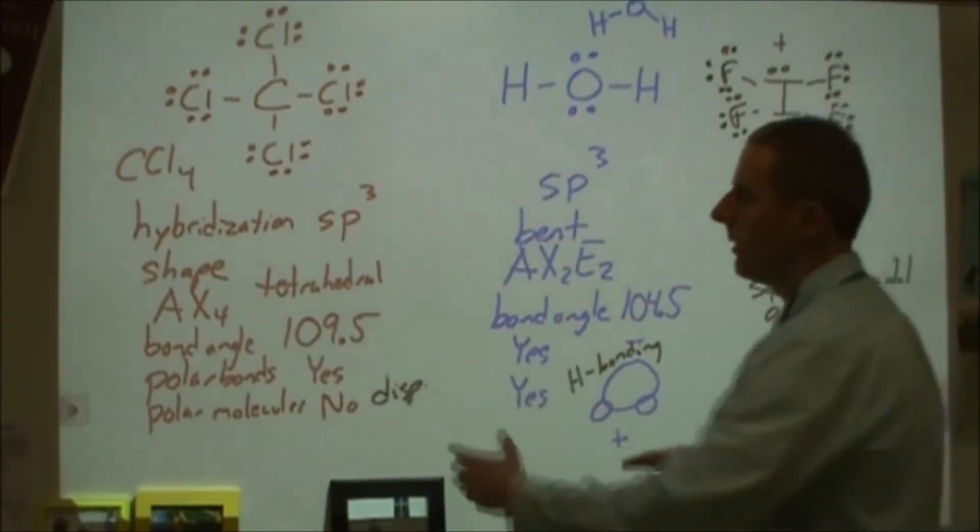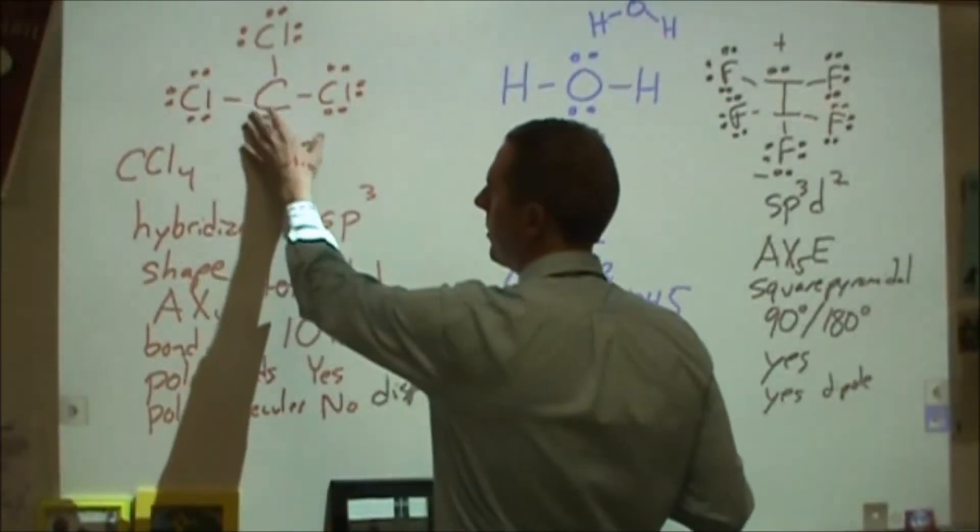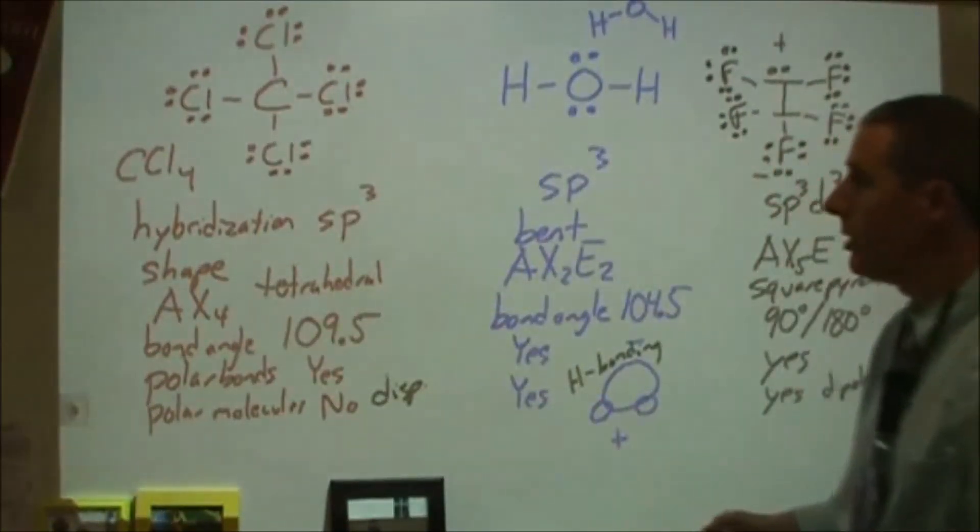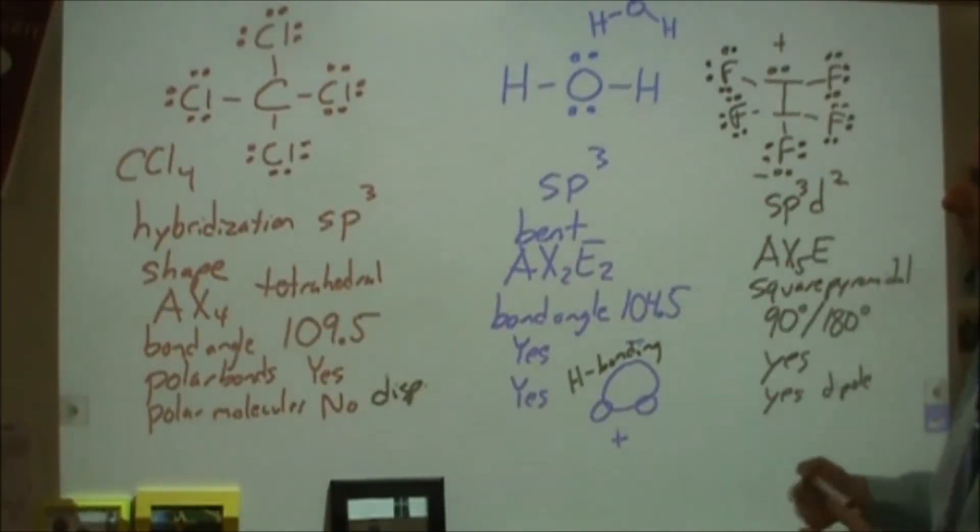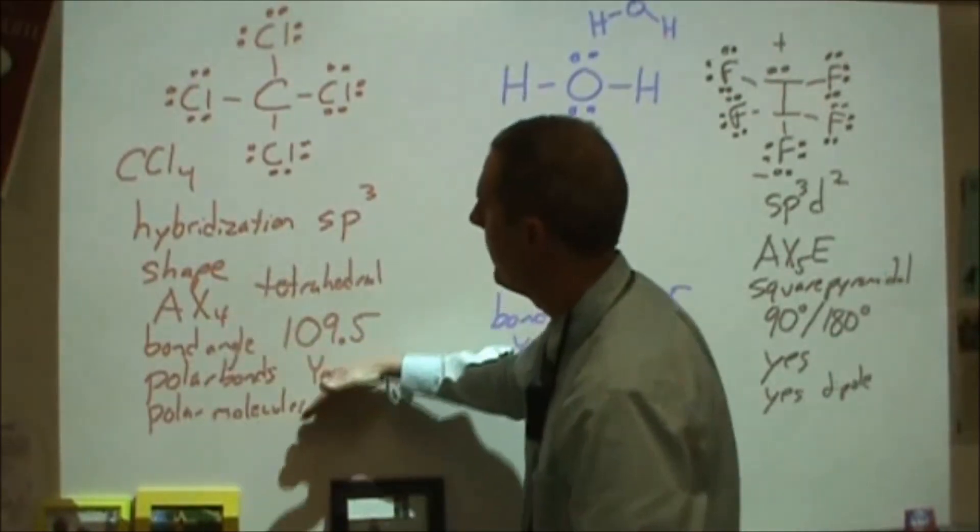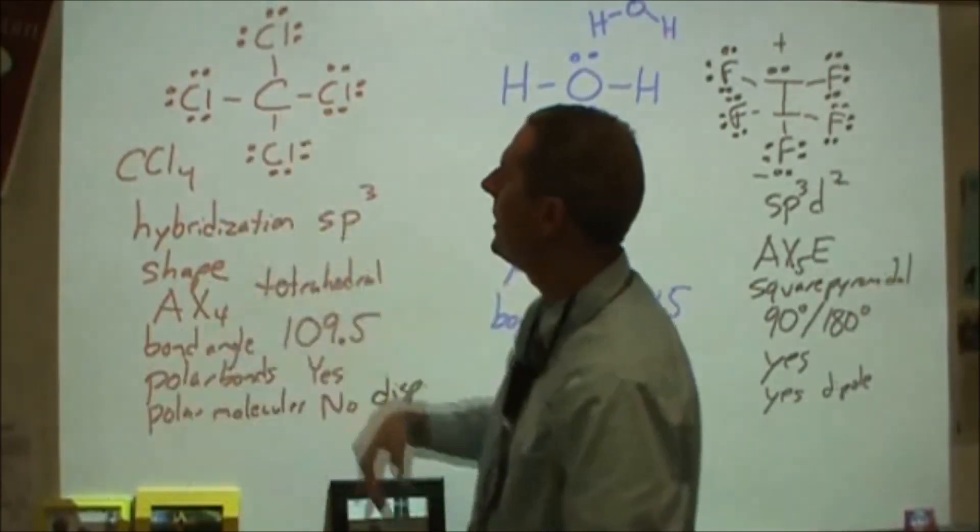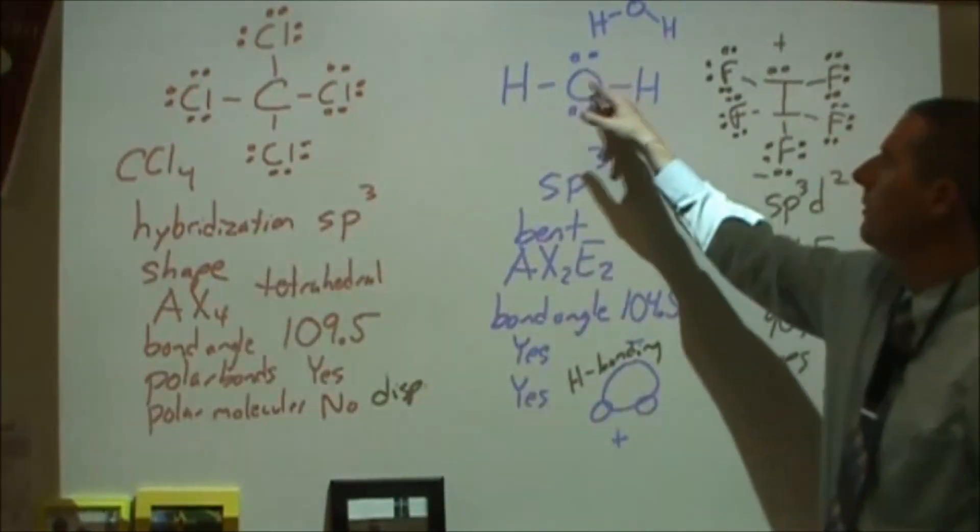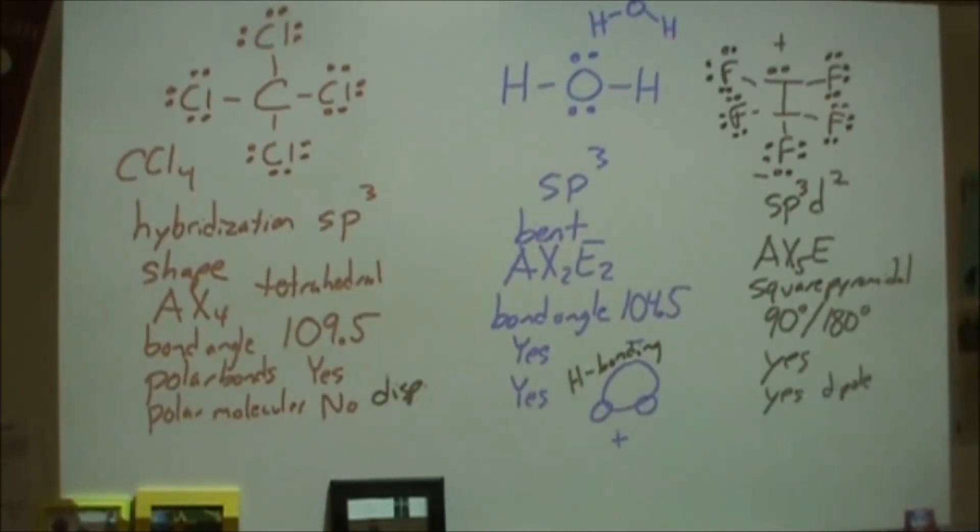So really, at the beginning of Lewis structures, you want to understand that this is a 2D flat image of something that's 3D, so there are limitations to how much information you can derive from it. But you can see here that there's a lot of information I can figure out just by how many things are attached, and how many of them are lone pairs, and how many of them are atoms. And from there we can get a lot of different things.